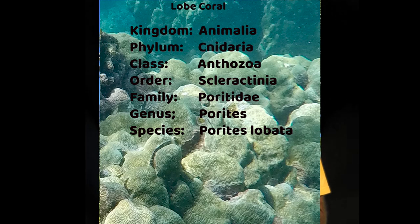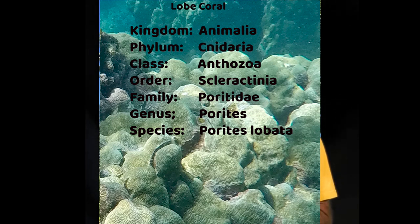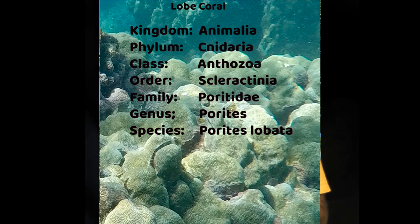I can describe every animal on earth with this classification system. So let's look at another example, one within our local Hawaiian waters — I'll do the common lobe coral. It's the kingdom Animalia again. It's the phylum Cnidaria. It's the class Anthozoa. It's the order Scleractinia. It's the family Poritidae. And it's the genus and species Porites lobata.